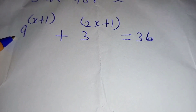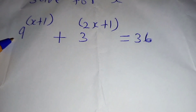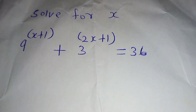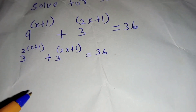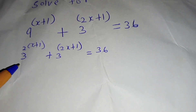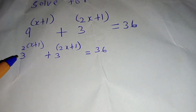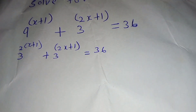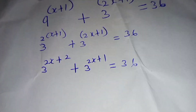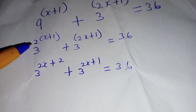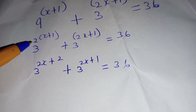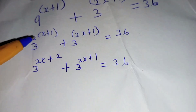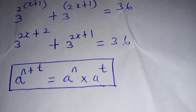We write 9 as 3 squared. After writing 9 as 3 squared, we remove the bracket so that we obtain the following. Removing the bracket on the index, it will be 2x plus 2, since 2 times 1 is 2.